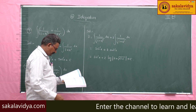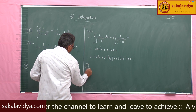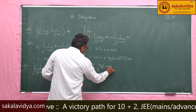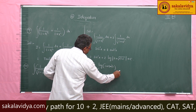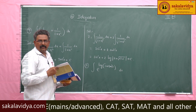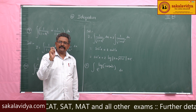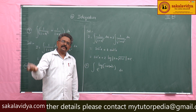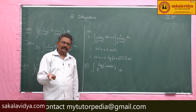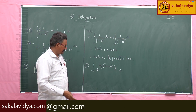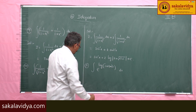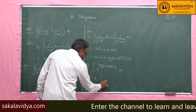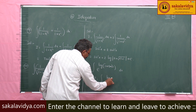Next, eleventh problem: evaluate integral of e power log of 1 plus tan square x dx. What is 1 plus tan square x? From trigonometry, 1 plus tan square x equals secant square x, because secant square x minus tan square x equals 1. So 1 plus tan square x is replaced by secant square x. This I is equal to integral of e power log of secant square x dx.